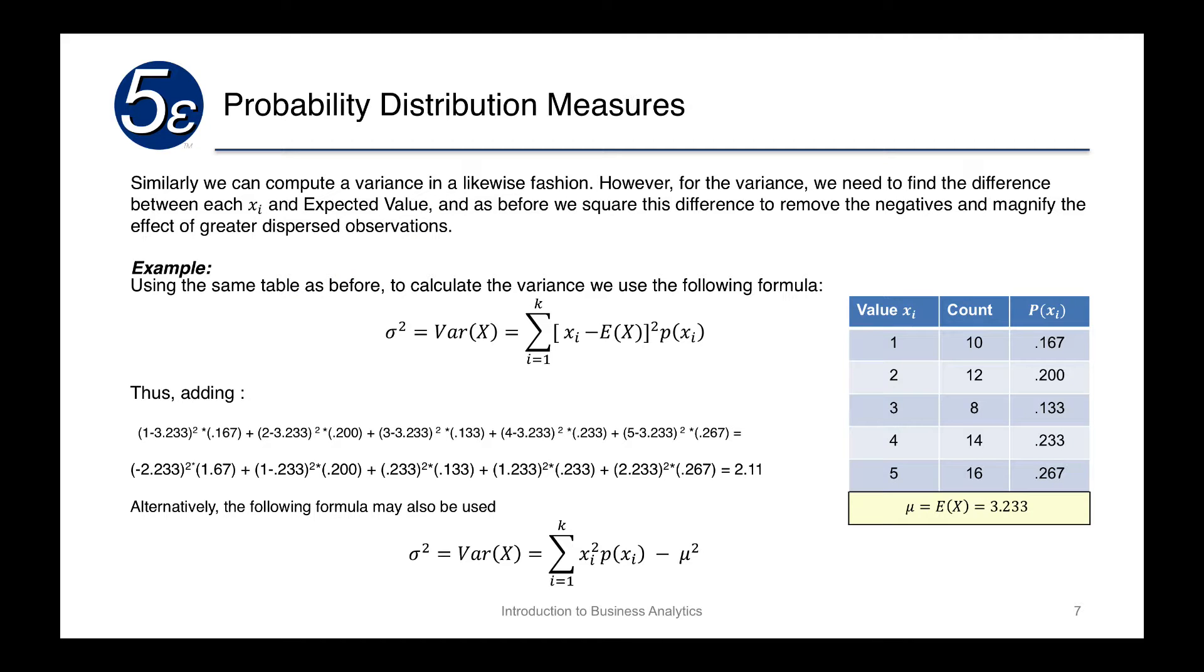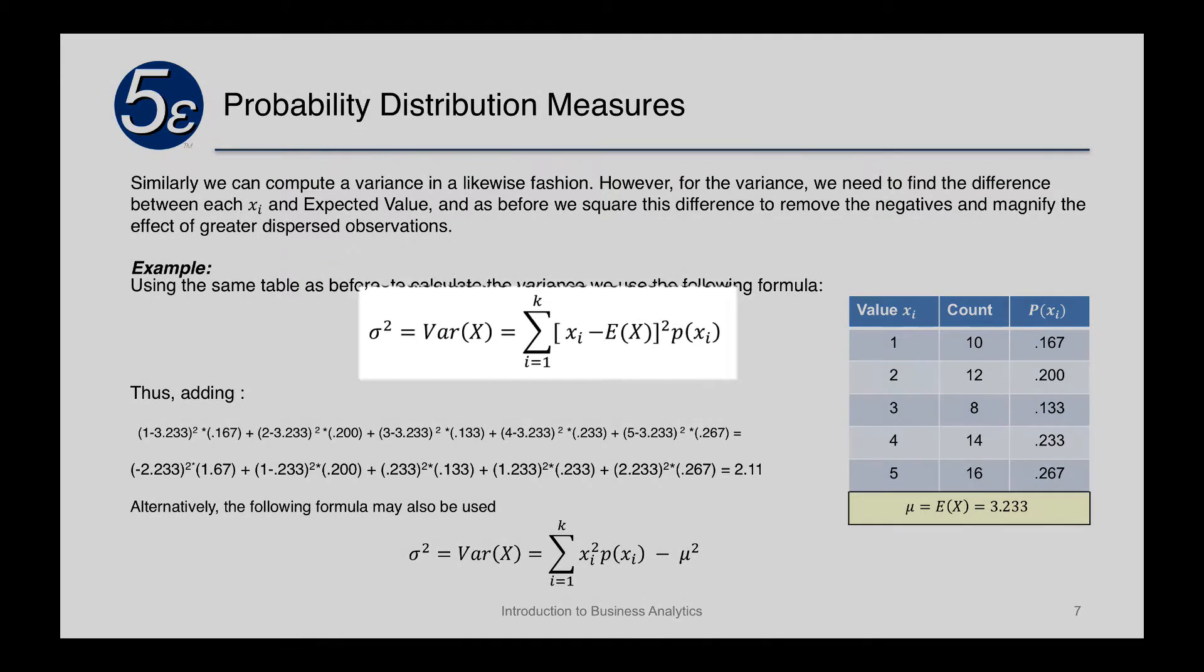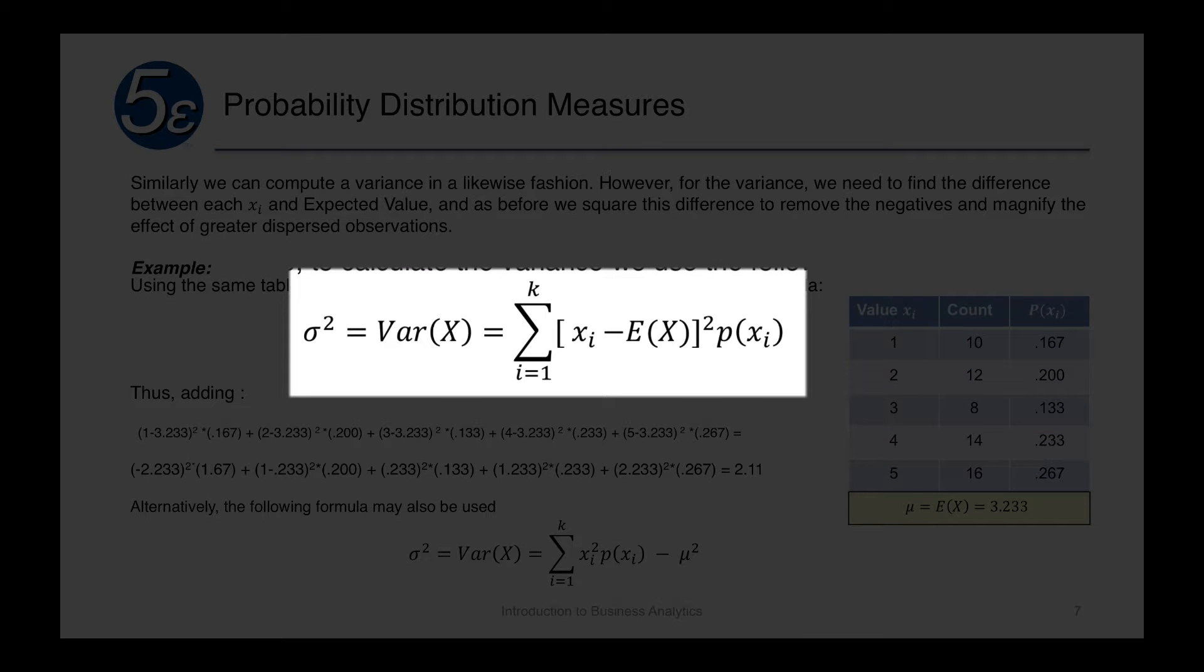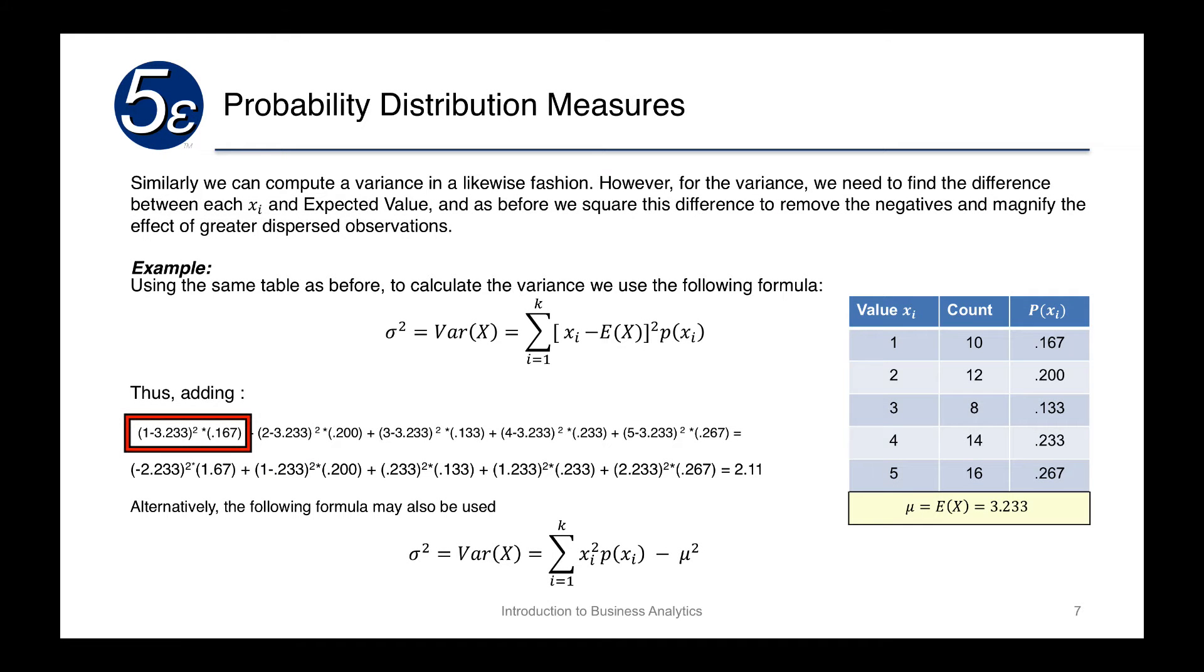So using the same table as before, we calculate the variance using the following formula. Again, we'll use σ squared, which equals the variance of x. We will add up each of the individual pieces, which is xi minus the expected value of x, which we've done before in the previous slide as 3.233, and we will square it. We'll then multiply it by the probability of xi. So in the first case, we will have 1 minus 3.233, square it, and then multiply it by 0.167. Then for the second one, we'll take 2, subtract 3.233, square it, and then multiply it by 0.200. And we'll continue this all the way up through 5. And when we do that and add them all together, we will end up with 2.11.